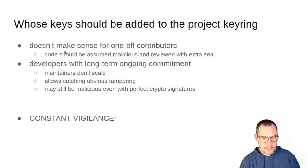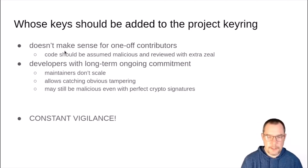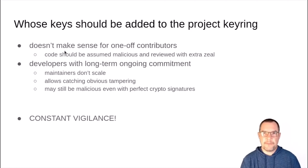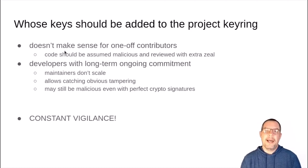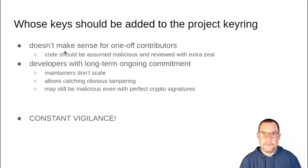Whose keys should be added to the project keyring? It doesn't really make sense for one-off contributors. If somebody sent you a patch you've never seen before, you should always assume the code is potentially malicious and review with extra zeal. But for somebody you work with on an ongoing basis, day in and day out, you want a quick way to verify that the patches they sent actually did come from them and haven't been tampered with en route. The keyring management as proposed by PatHat and B4 allows you to add this as an extra layer of protection around your workflow. It doesn't mean you should stop being vigilant — constant vigilance as always — but keep this as an option, especially if you work with many contributors and want to make sure patches are coming straight from them.